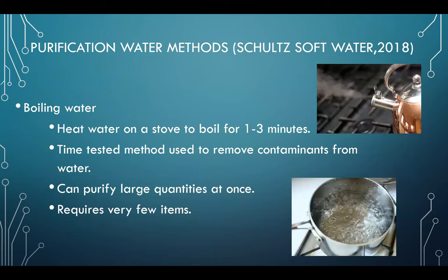We're going to go into boiling water as a purification method. You heat water on the stove for about one to three minutes. You need a metal pot — fill it up with water and put it on the stove. Let the water heat for one to three minutes. This is a time-tested method used to remove contaminants from water. One of the pros is that you can boil large quantities of water at one time, and it requires only a few items to do so.